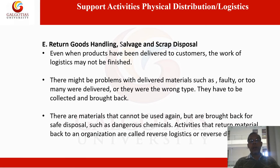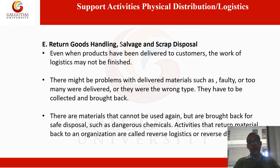Return goods handling, salvage, and scrap disposal: when products have been delivered to the customer, the work of logistics may not end. There might be problems with the delivered product — such as a faulty product, too many products delivered, or wrong product delivery — and they have to be collected back. Materials that cannot be used again are brought back for safe disposal, such as dangerous chemicals. This activity that returns material back to an organization is called reverse logistics. Forward logistics means finished products going to the customer, while reverse logistics means faulty or wrong material delivered is returned back to the finished goods warehouse.